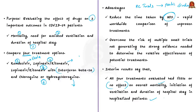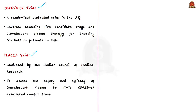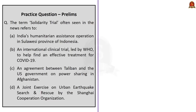The Solidarity Trial is now considering evaluating other treatments to continue the search for effective COVID-19 therapeutics. We must also know about the Recovery Trial and the PLACID Trial. The Recovery Trial is a large randomized control trial in the United Kingdom, involving five candidate drugs and convalescent plasma therapy for treating COVID-19. The PLACID Trial is conducted by the Indian Council of Medical Research to assess the safety and efficacy of convalescent plasma to limit COVID-19 associated complications.